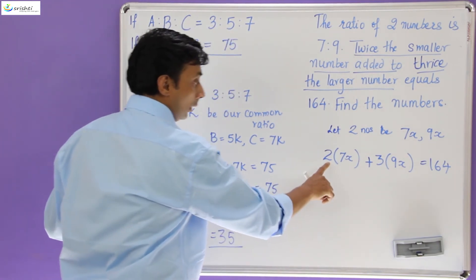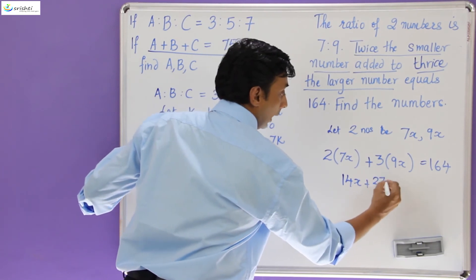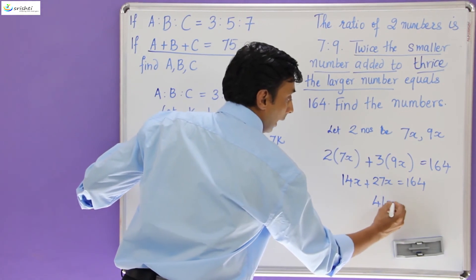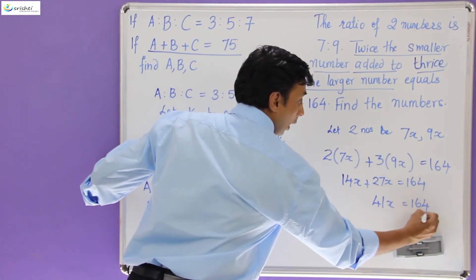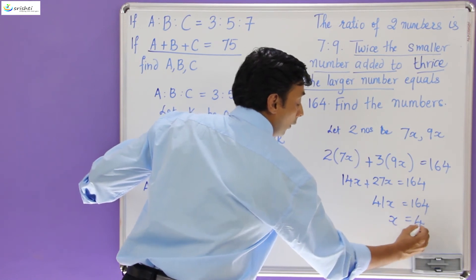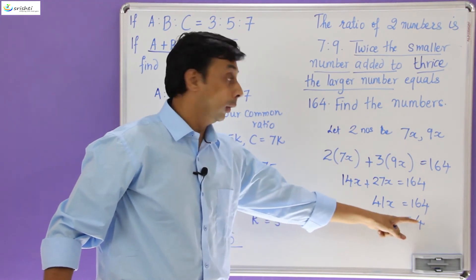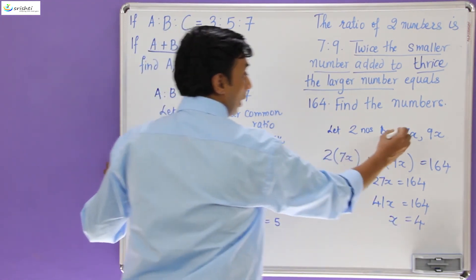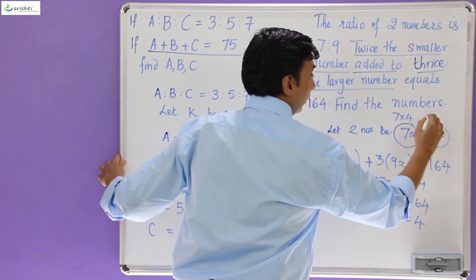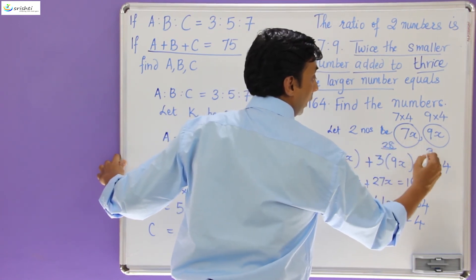So now let's solve this equation: 2 × 7x = 14x, plus 3 × 9x = 27x, equals 164. Adding these gives 41x = 164, which means x = 164 ÷ 41 = 4. So the common ratio is 4. The two numbers are therefore 7 × 4 = 28 and 9 × 4 = 36.